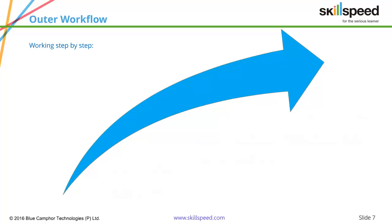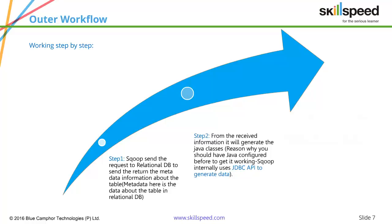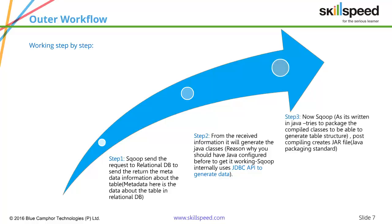There are three steps involved in how Scoop works. Step one: send a request to the RDBMS for the metadata — the data about the table in the relational database. Step two: from the received information, generate the Java class. That is exactly why Java must be installed — the Java class is generated and Scoop internally uses JDBC APIs to generate the data. Step three: Scoop compiles and creates the jar file. Whether it is a map job or a reduce job, it has to be in the form of a jar file. Scoop converts your job into a jar file, packages the compiled classes to generate the table structure, and submits it to the system.